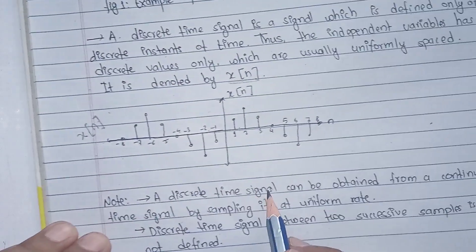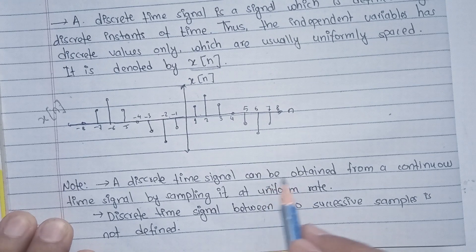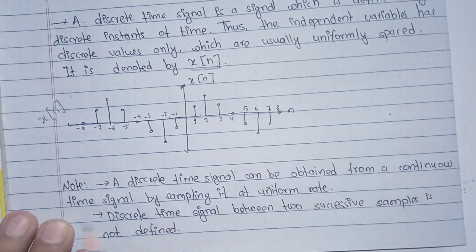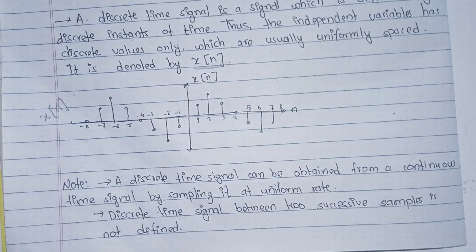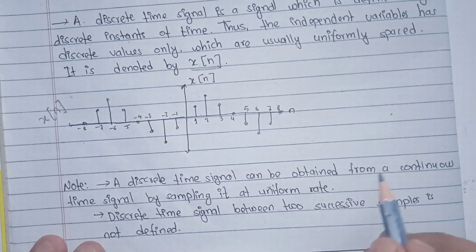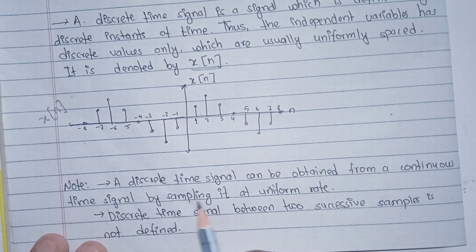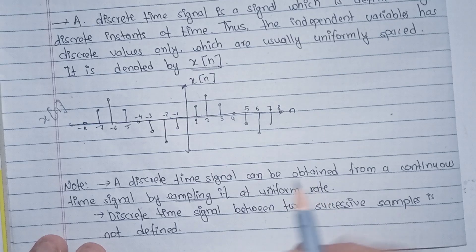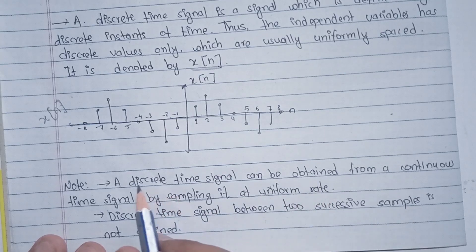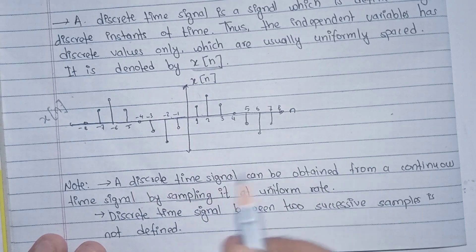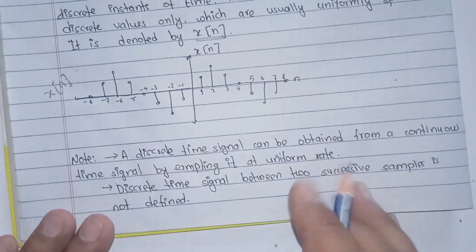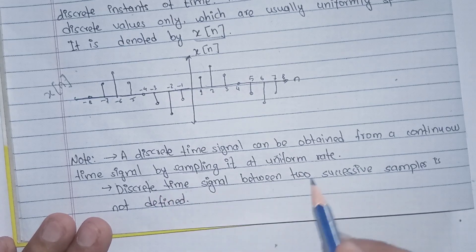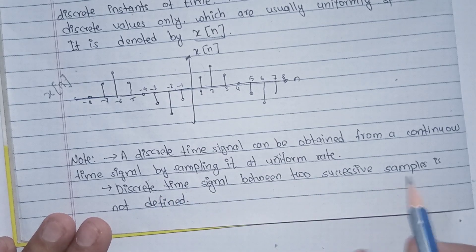The discrete time signal can be obtained from a continuous time signal by sampling it at a uniform rate. The signal value between two successive samples is not defined.